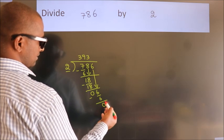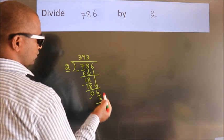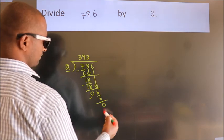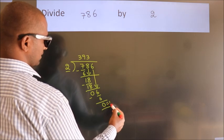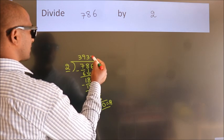After this, no more numbers to bring down. So we stop here. This is our remainder. This is our quotient.